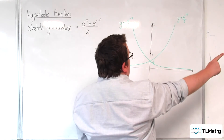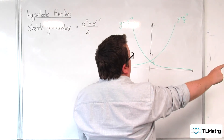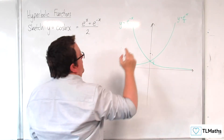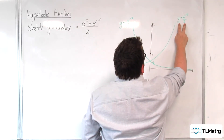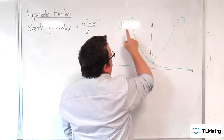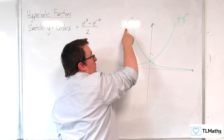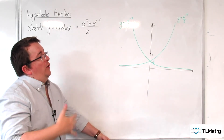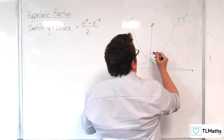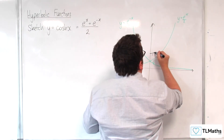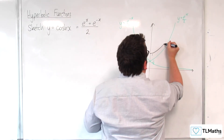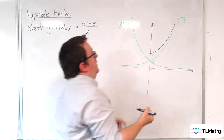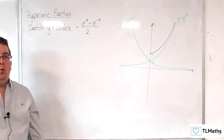As x increases in the positive x direction, this graph gets bigger and bigger, whereas this one gets smaller and smaller. So our curve is going to get closer and closer to this one, but the green one is never going to catch it.